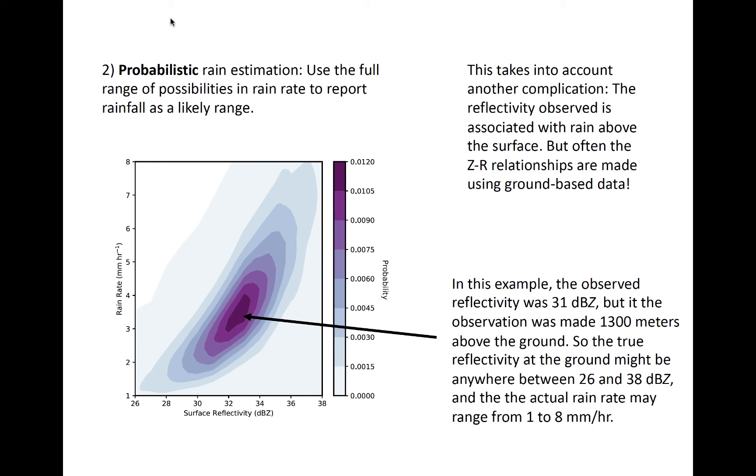The probabilistic method can account for the spread in potential rain rates, given some value of reflectivity. Consider also that the data we looked at on the last slide was derived from ground-based data. However, radar data observes backscattered radiation at some altitude above the ground.